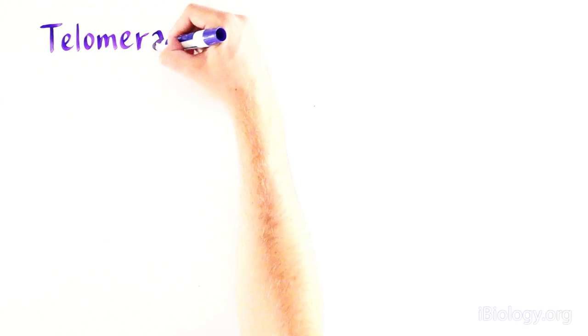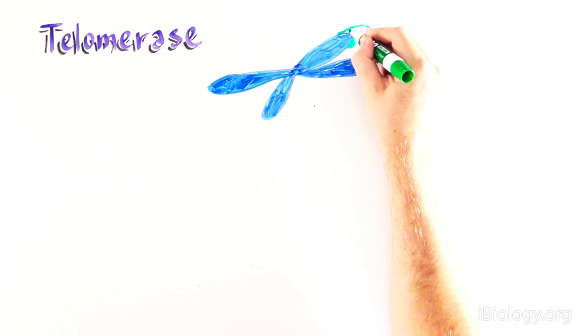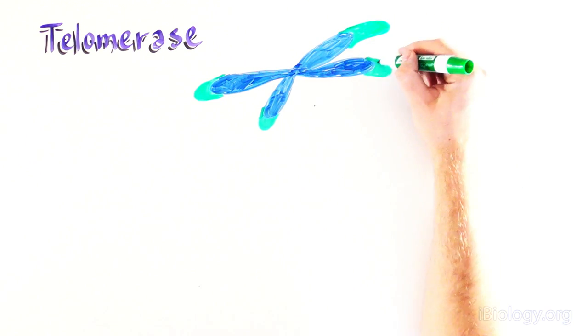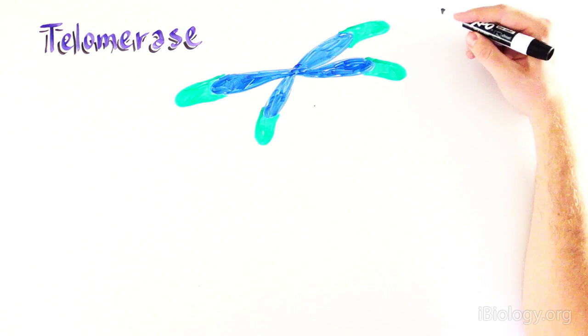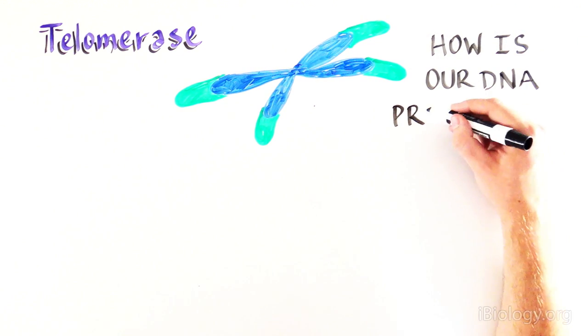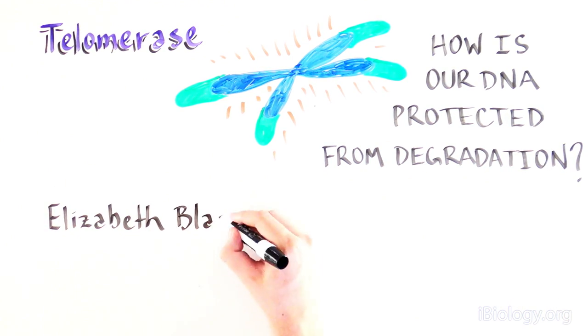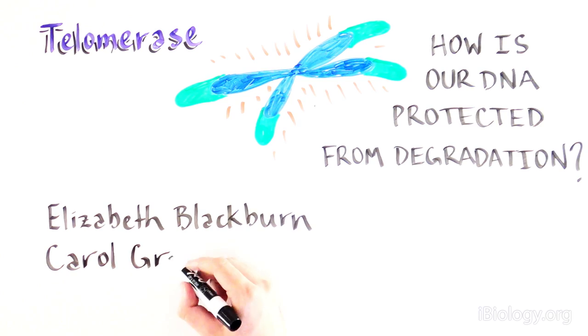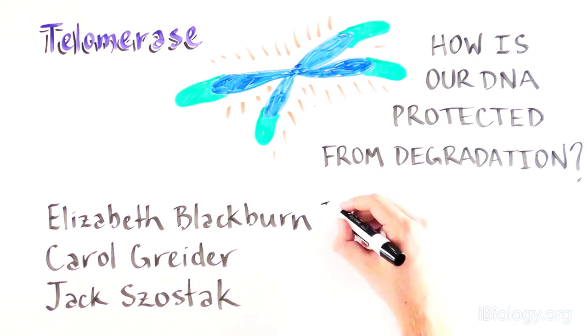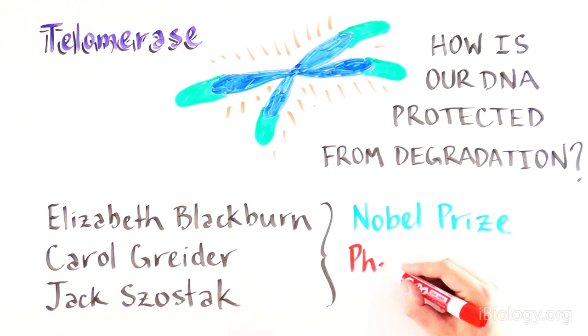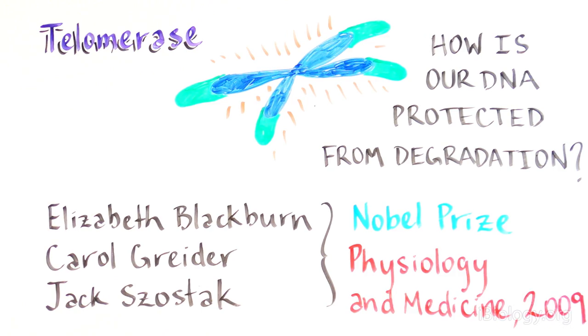By discovering that telomerase is the enzyme that can extend the protective caps at the ends of chromosomes called the telomere, these scientists solved one of the most important puzzles in biology. How is our DNA being protected from degradation after each cell division? This important discovery was the reason these scientists, along with Jack Shostak, won the Nobel Prize in Physiology and Medicine in 2009.